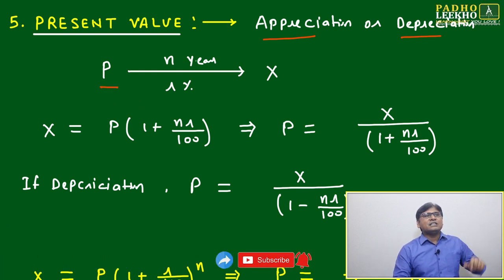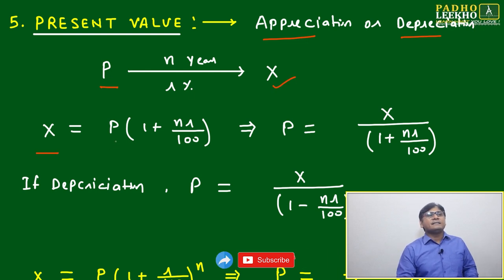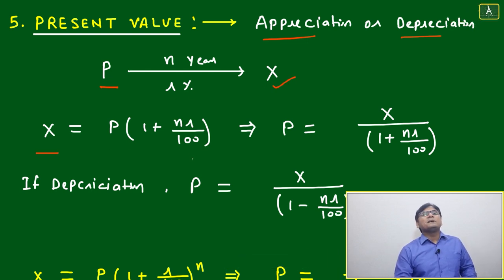Like, just suppose P amount was there. After n years at r percent of interest, it has become X. Then X we will be able to say P into 1 plus nr by 100. There is no issue.